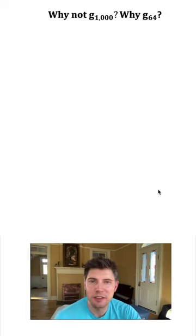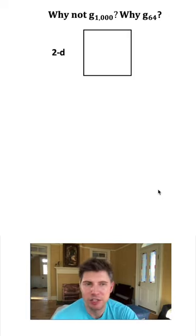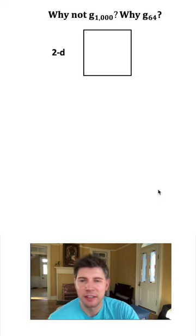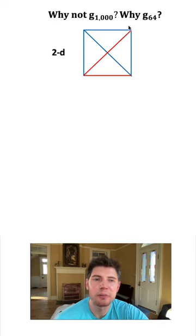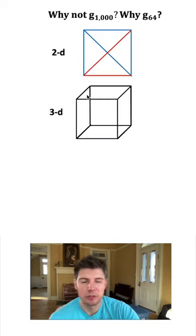So there's a field called Ramsey theory. Looking at the figures of different dimensions, like a square for 2D, and then connecting all the vertices with a combination of blue and red. Notice here that every plane in our figure has a mixture of red and blue lines.